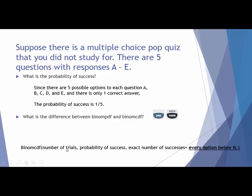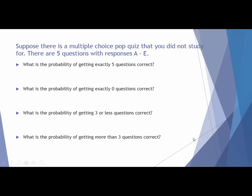Binomial CDF has the same first two entries — your number of trials and your probability of success. But the last term X now represents the exact number of successes and every option below it. It finds the probability of whatever number you enter plus all of the probabilities below it.